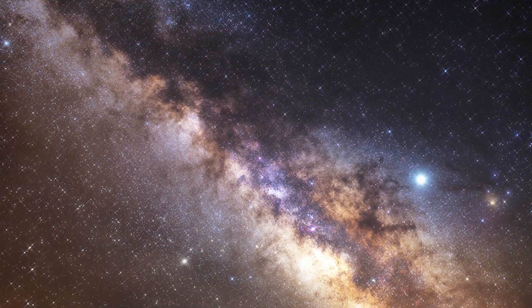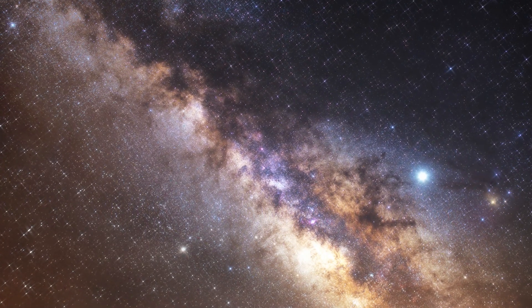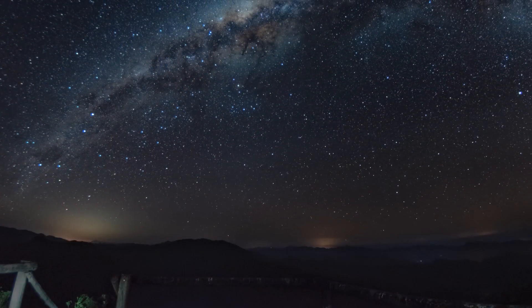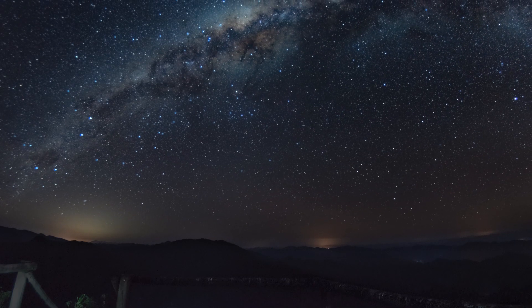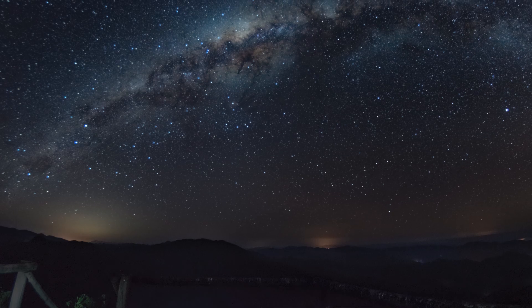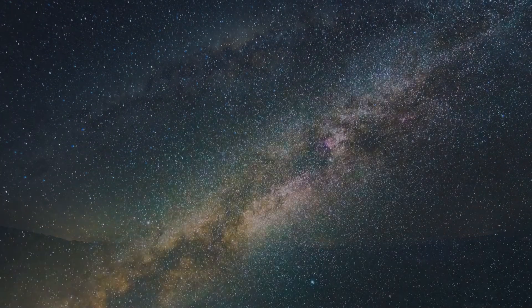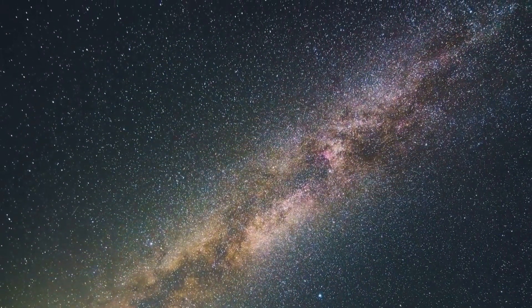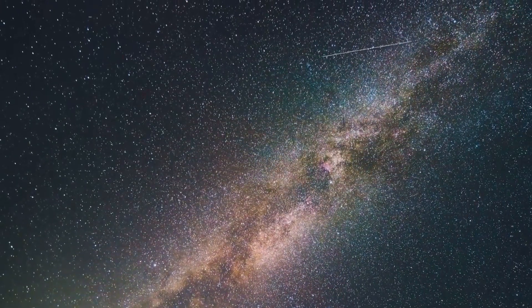So, let's embark on an imaginary journey across the Milky Way. To give you an idea of the scale we're dealing with, consider this. Our Milky Way is about 100,000 light-years in diameter. That's a number that's difficult to wrap our heads around, isn't it? So, let's break it down.